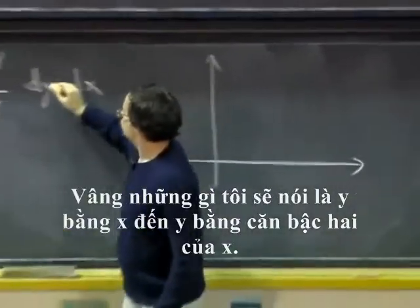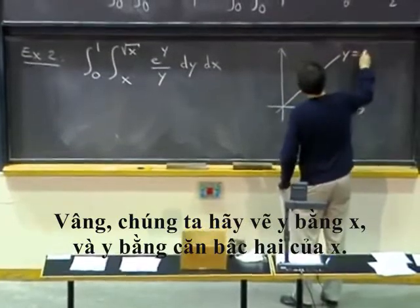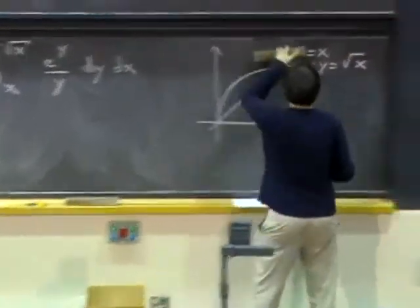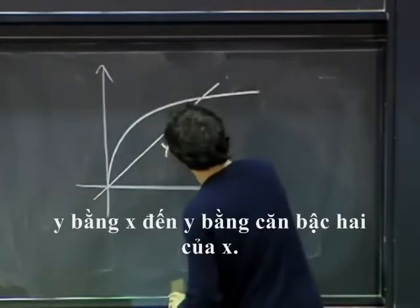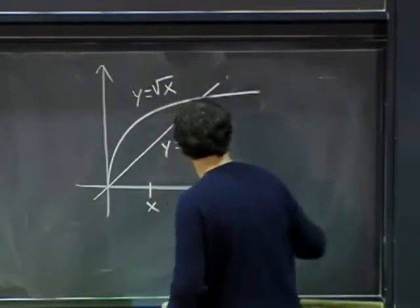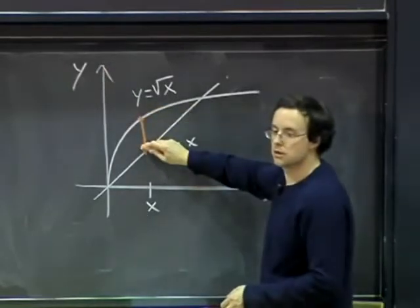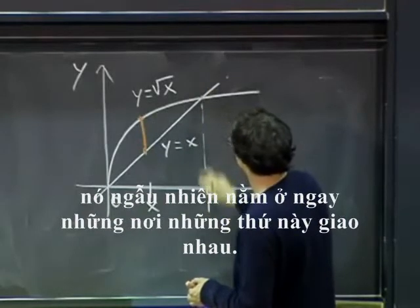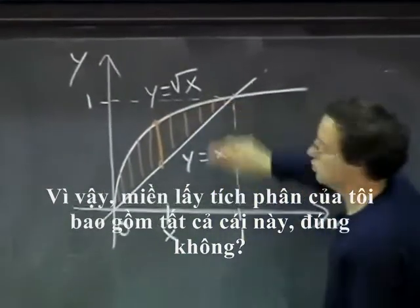OK, so let's draw a picture of the region. Well, what we are saying is y goes from y equals x to y equals square root of x. Well, let's draw y equals x and y equals square root of x. OK, so I will go from y equals x to y equals square root of x. OK, and so I will go for each value of x from x equals zero to x equals one, which happens to be exactly where these things intersect. So my region will consist of all this.